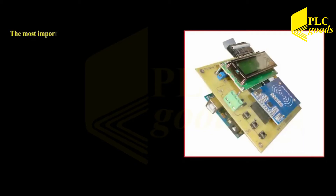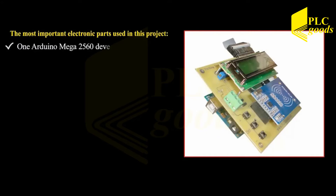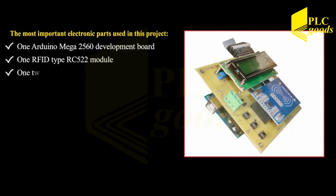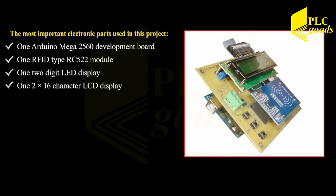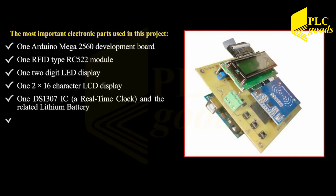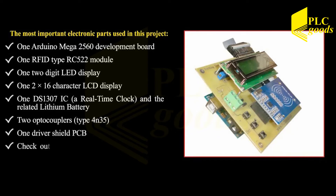The most important electronic parts used in this project: one Arduino Mega 2560 development board, one RFID type RC522 module, one two-digit LED display, one 2x16 character LCD display, one DS1307 IC real-time clock and the related lithium battery, two opto-couplers type 4N35, one driver shield PCB. Check out page 35 for a complete list of the parts used in this project.